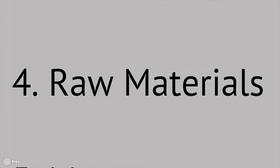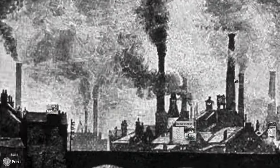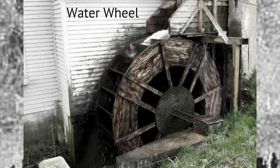Raw materials. England's geography really lent itself to industrialization. First off, because it had lots of rivers. Of course, rivers can be a great source of transportation, and we'll get into that later. But another thing you may not realize is that rivers can be a source of fuel, namely because they power water wheels like what you're looking at right now. The water wheel was the main power source for many of the machines early on in the Industrial Revolution.